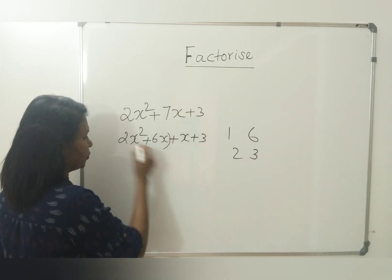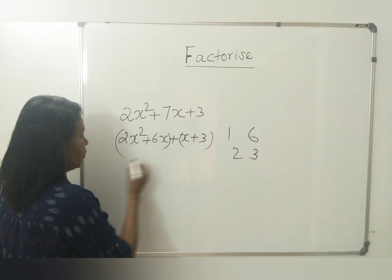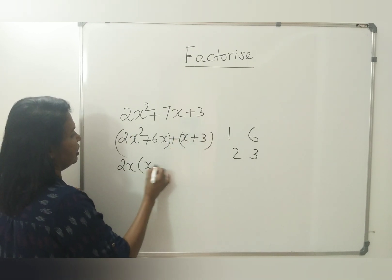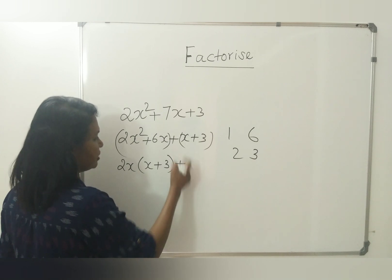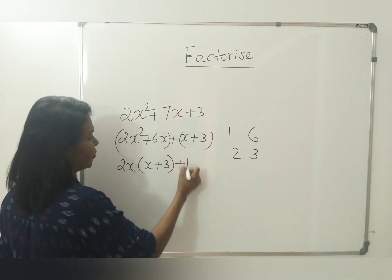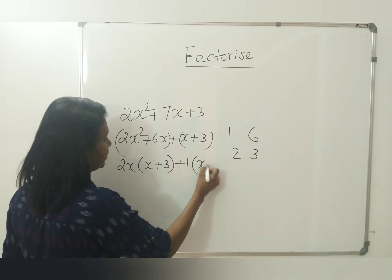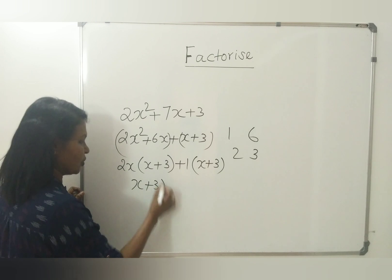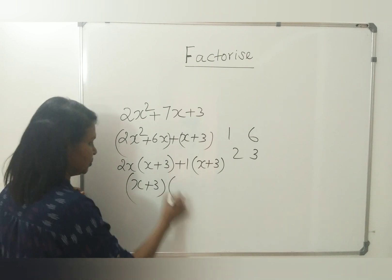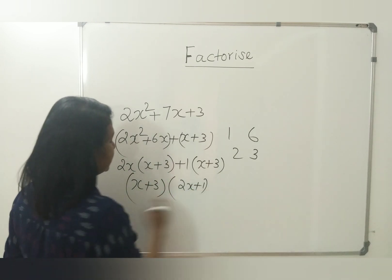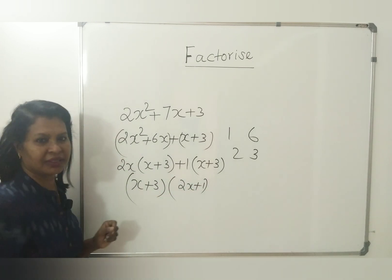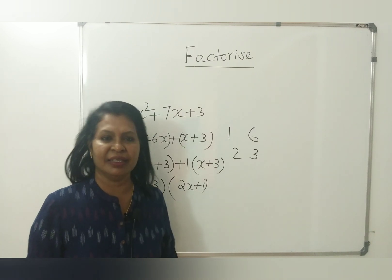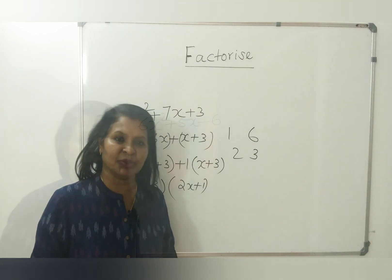This is grouping. Now 2x is common, you get x plus 3. Plus, 1 is common there; you write 1 into x plus 3. Again, x plus 3 is common, into 2x plus 1. These are the factors. Now, the next question: what is the product? Negative 36.